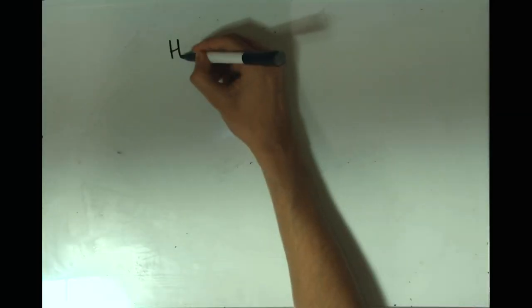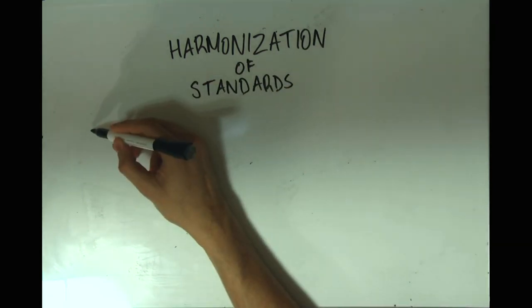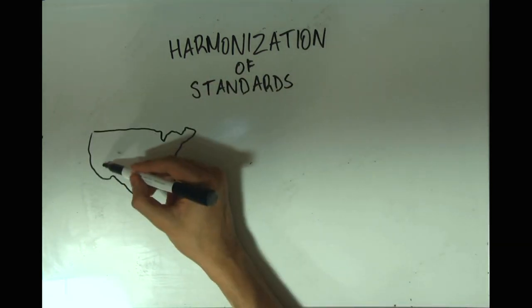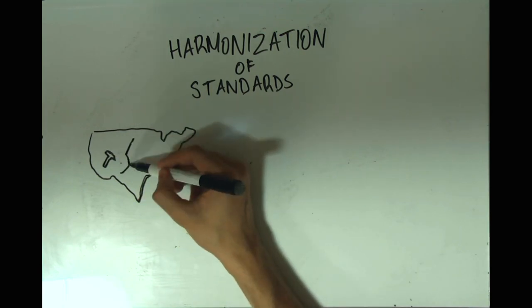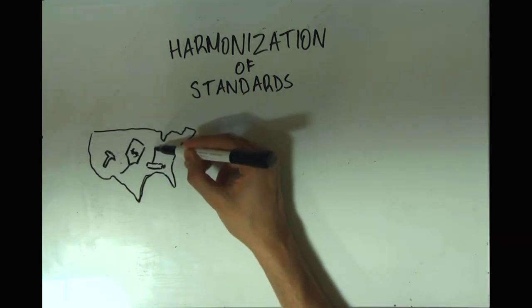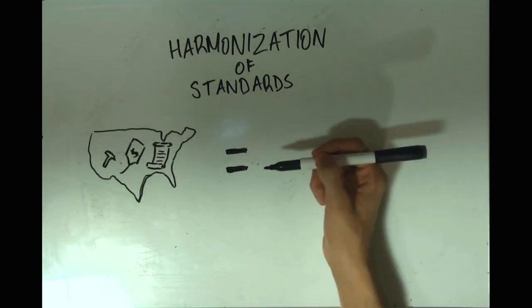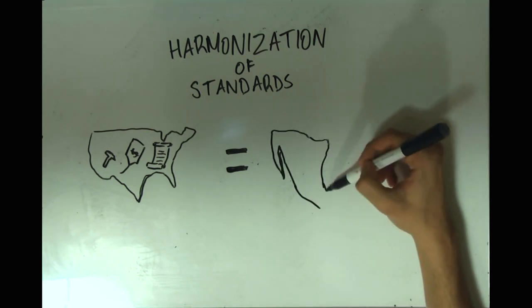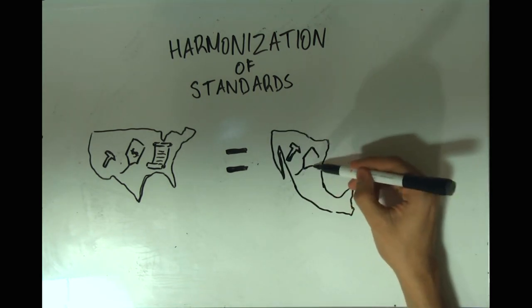The final issue Rodrik outlines is the harmonization of standards, which seeks to create even domestic policies across the borders for ease of trade. In other words, this feature tries to make sure that regulatory laws, wages, and tariff levels are the same for all the countries involved in the agreement.